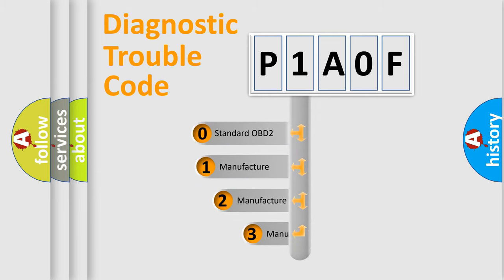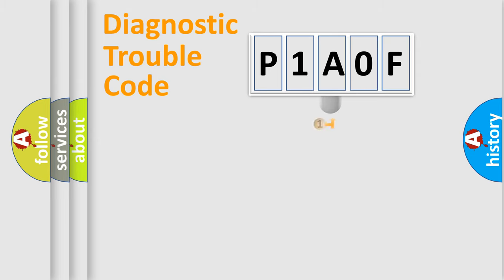If the second character is expressed as zero, it is a standardized error. In the case of numbers 1, 2, or 3, it is a more prestigious expression of the car-specific error.